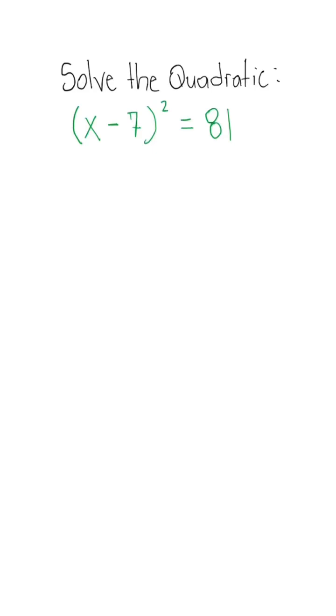We could do two of these methods. We could come in and use the square root method to get rid of the exponent. So we have x minus 7 is equal to plus or minus the square root of 81, which is 9. Isolate x, so we have x is equal to positive 7 plus or minus 9.